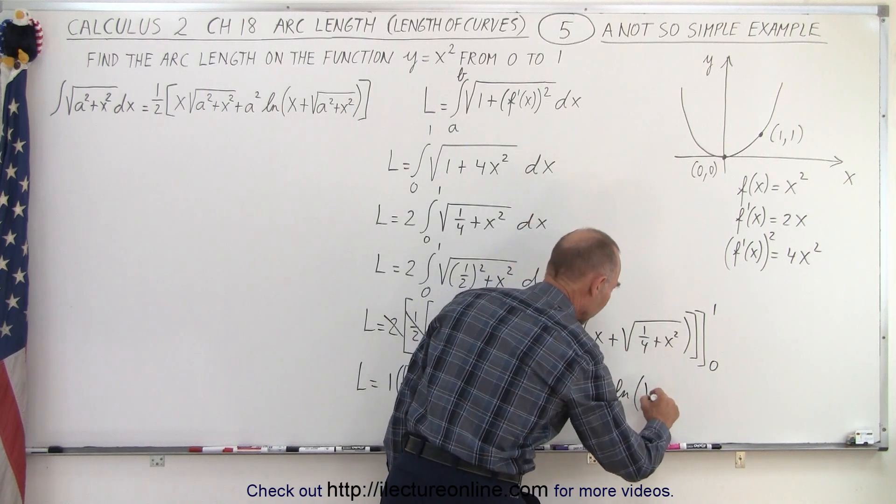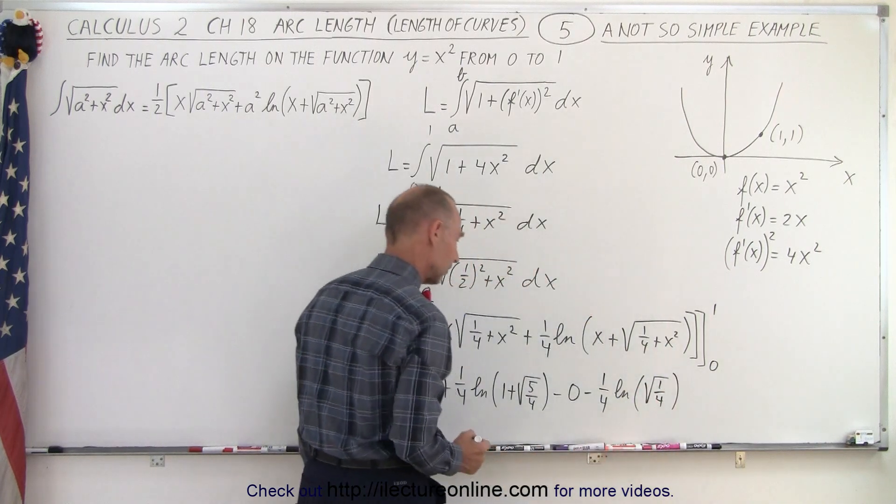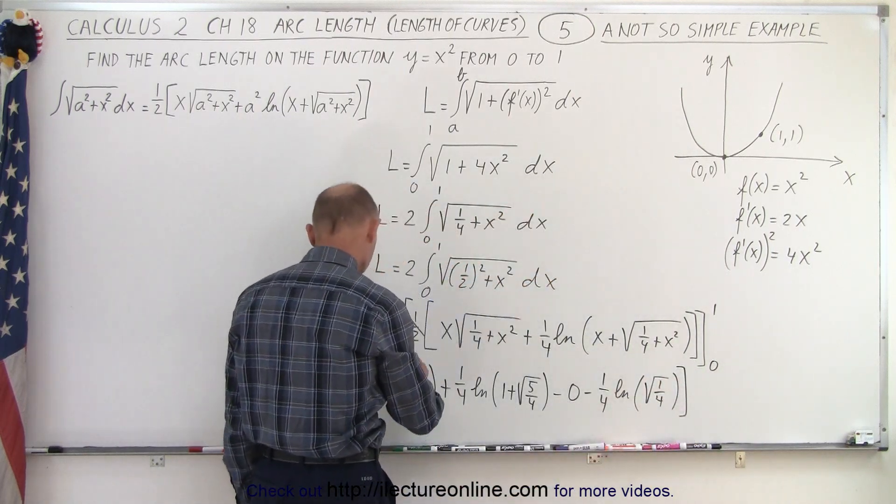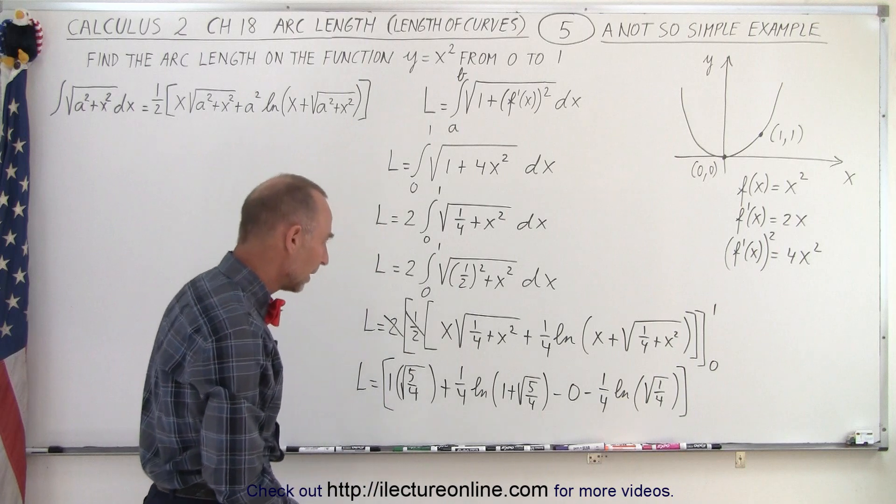So I get minus 0 minus 1/4 times the natural log of 0, and 0, we have the square root of 1/4, like this. And then we can close the brackets. So I have an opening bracket here. All right.